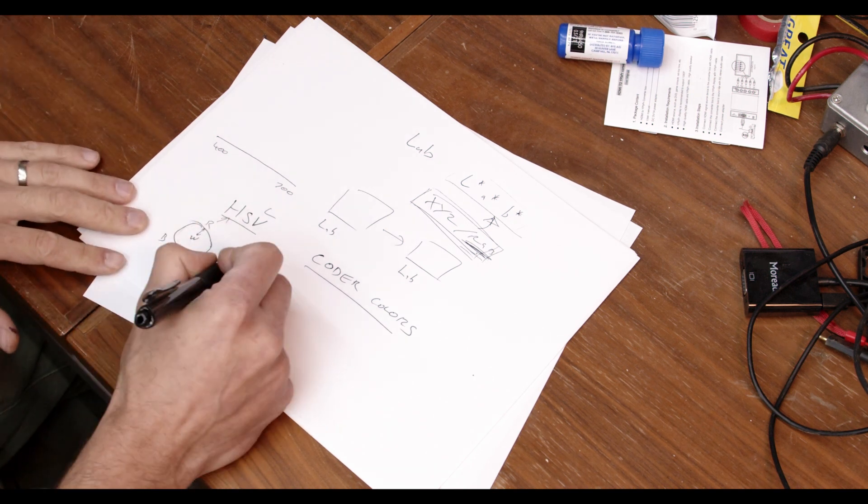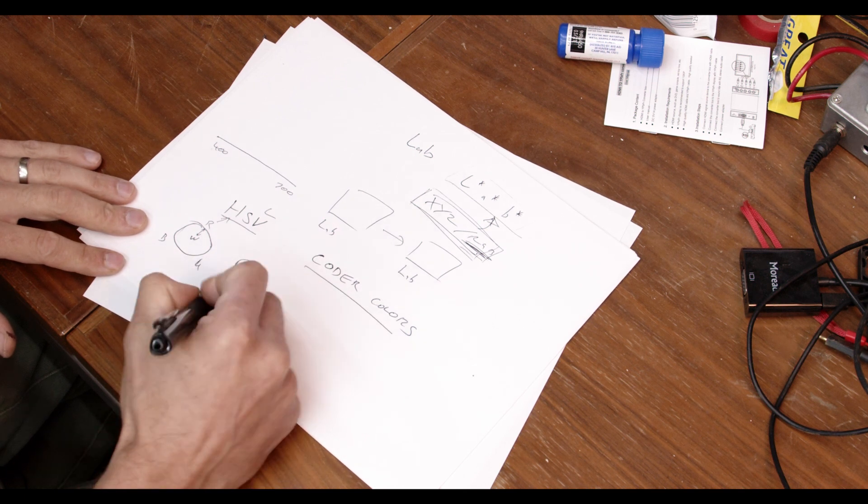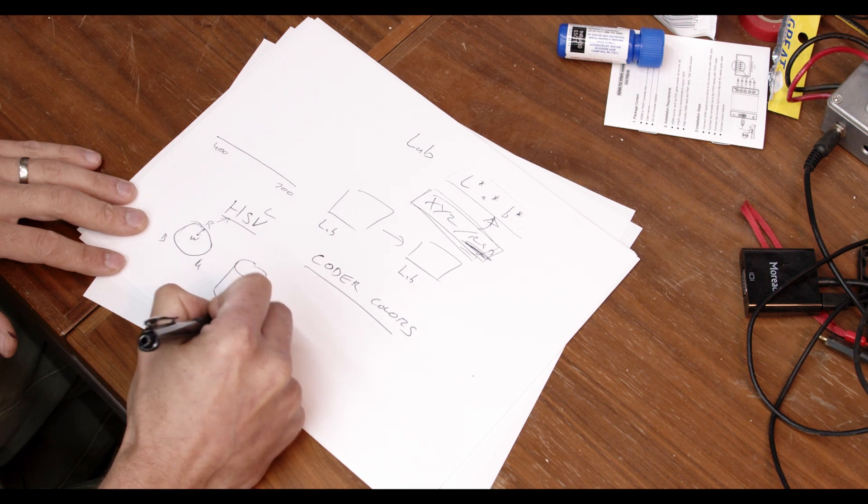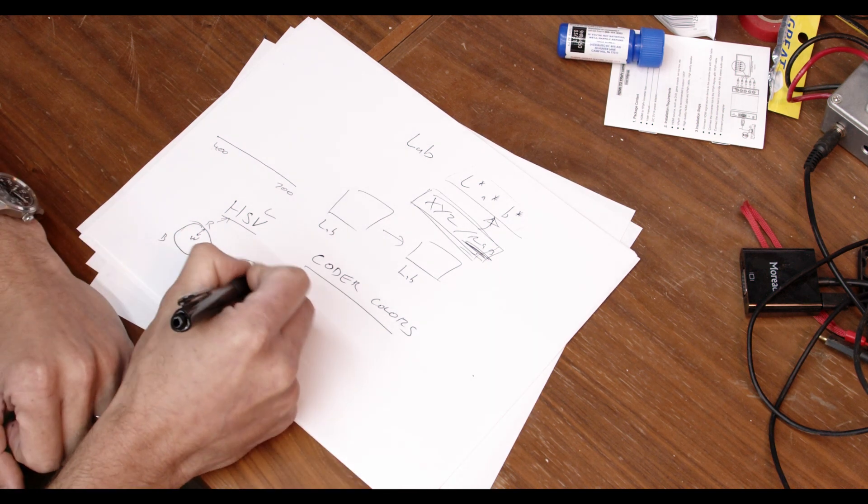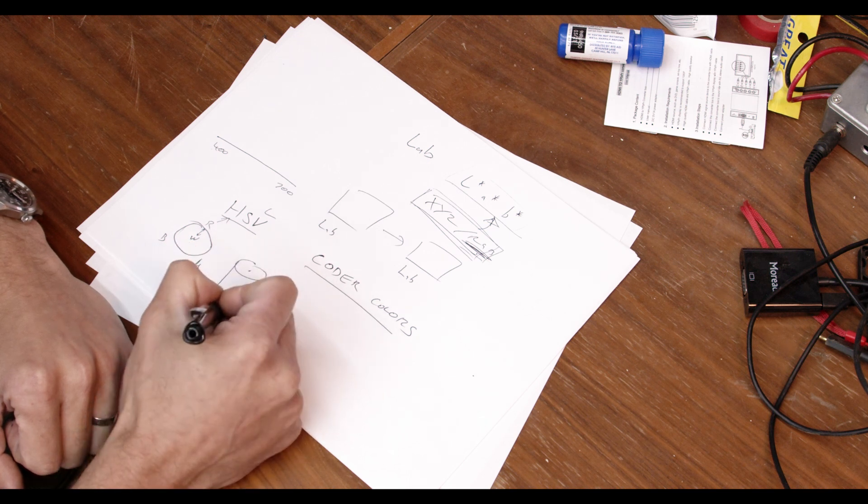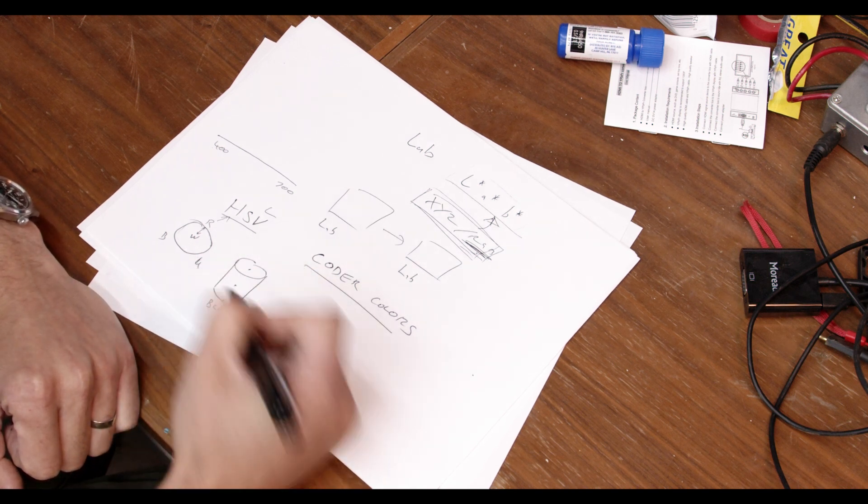Then value is, you can imagine extending this to being a cylinder, where you have black down here. B-L-A-C-K, black, where you have your colors around here, your hues around here. You have white running down the center. So it's white up here. It's gray down here. It's black down there. And you get a cone or a cylinder of colors.